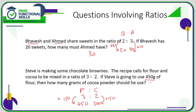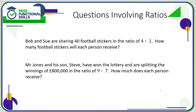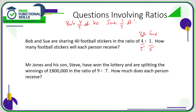Sometimes you need to share a total in a ratio. Bob and Sue are sharing forty football stickers in a ratio of four to one. We're going to turn the ratio into fractions: Bob receives four-fifths and Sue receives one-fifth — we're dealing in fifths because four plus one is five. One-fifth of forty is forty divided by five, so Sue gets eight stickers. Bob gets forty divided by five, multiplied by four, which is thirty-two. We know this is right because thirty-two plus eight equals forty.